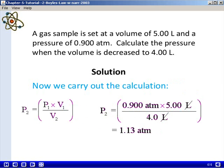When we plug in our known values, our initial pressure was 0.900 atmosphere times our initial volume of 5.00 liters, all divided by our final volume of 4.0 liters. We find that we get a final pressure of 1.13 atmospheres.